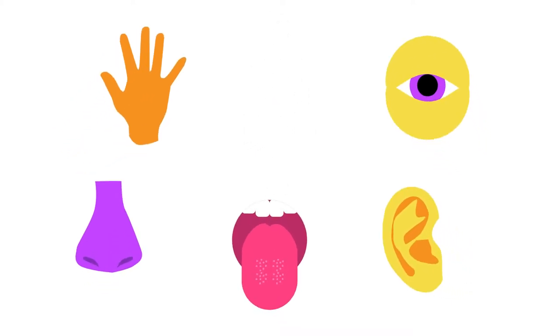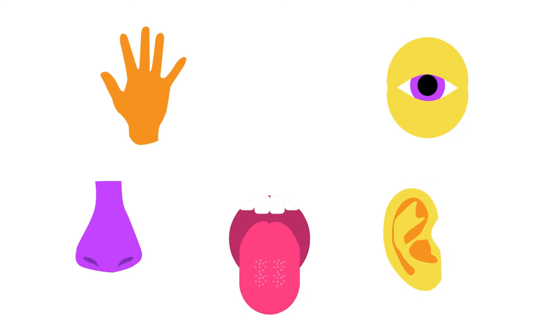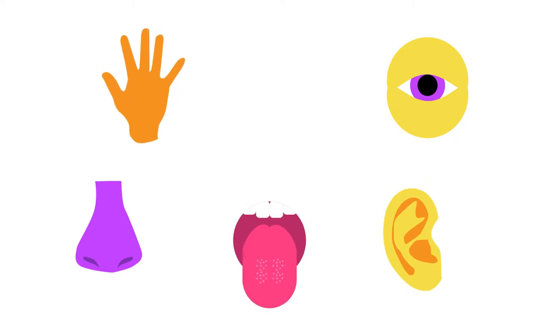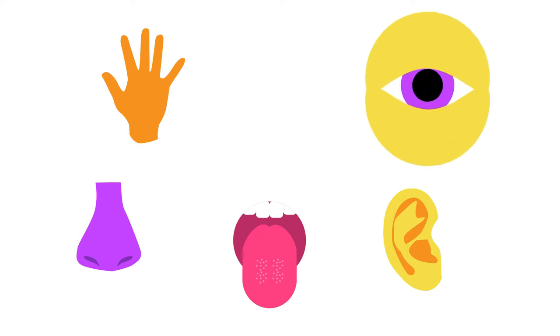Humans have five senses: sight, hearing, taste, touch and smell. Sight is the detection of light by our eyes.